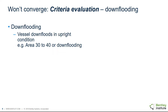A down flooding angle which is too low may also prevent convergence. Down flooding does not vary in a predictable way with VCG. For example, if the criterion area 30 to 40 or down flooding is selected and down flooding occurs at an angle of less than 30 degrees, the criterion will not evaluate and the limiting KG analysis will not converge.